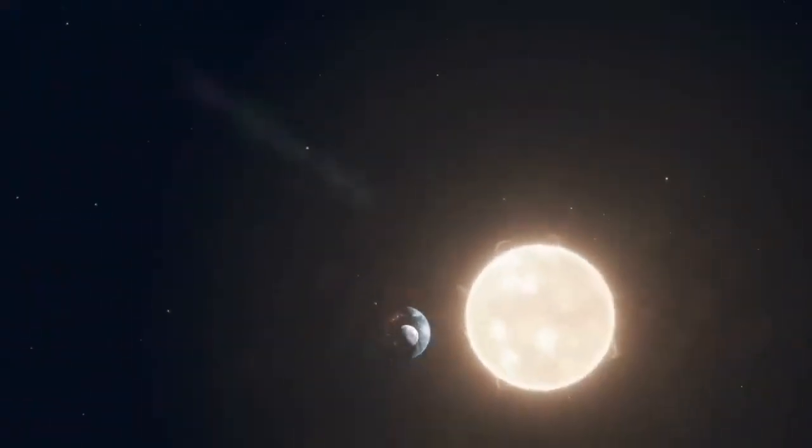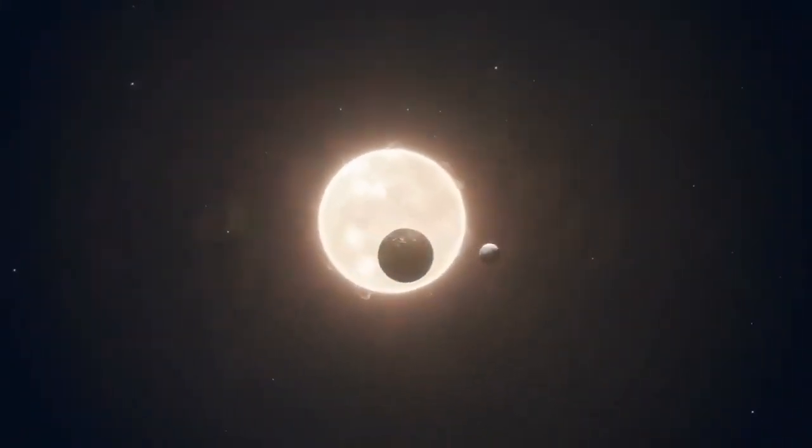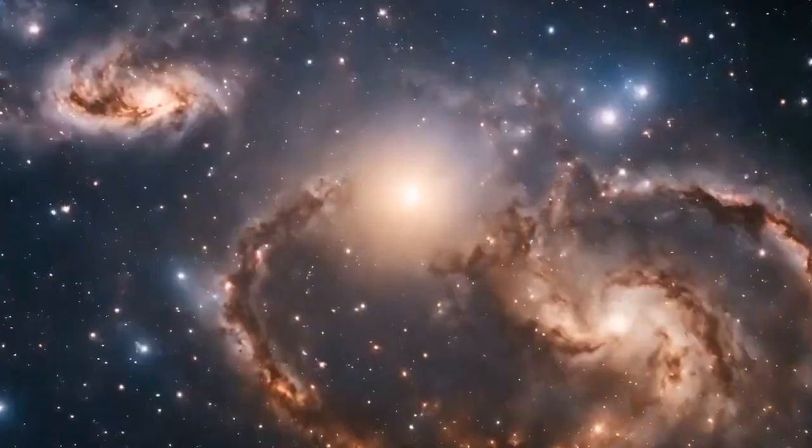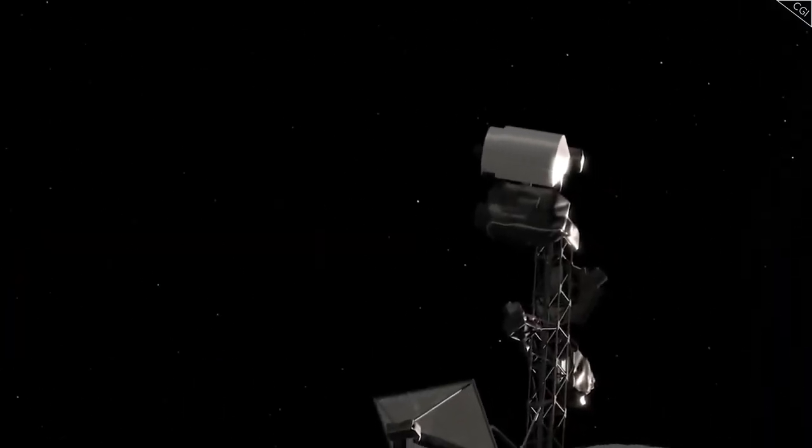But what exactly happened as the Voyager spacecraft crossed the edge of the solar system? Could we truly be trapped in a massive space bubble? And how does this discovery reshape our understanding of the solar system's dynamics? Let's dive in to find out.